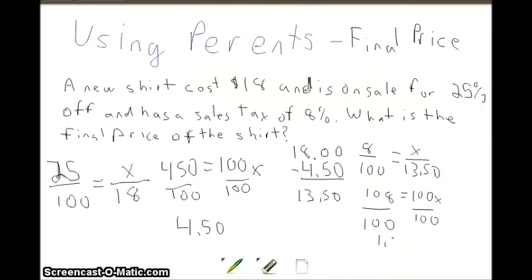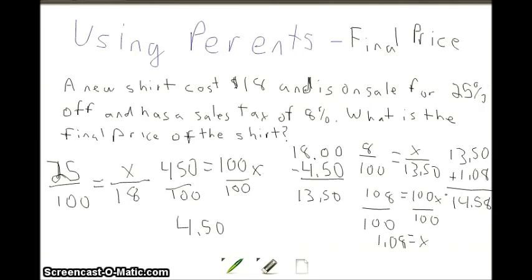That gives us $1.08 in tax. To find the final price, we take $13.50 for the shirt and add the $1.08 tax together, giving us $14.58 as the total amount you're going to pay for that new shirt.